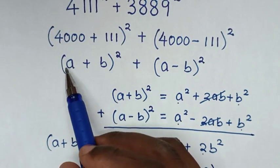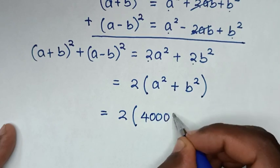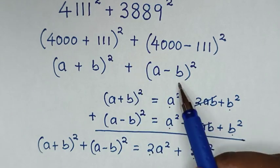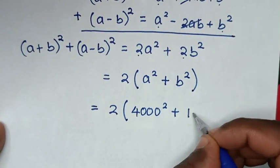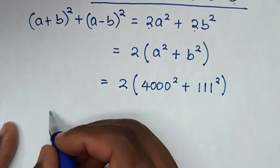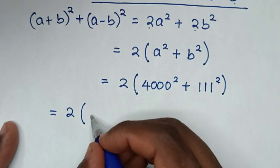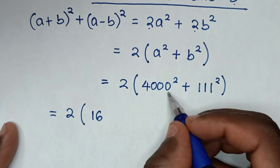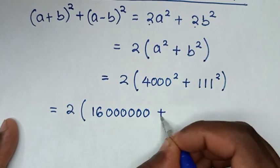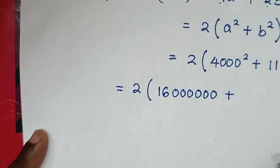Substituting back: a is 4000 and b is 111. So it becomes 2 times (4000² + 111²). Now 4000² equals 16 followed by six zeros, which is 16,000,000.